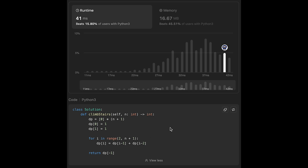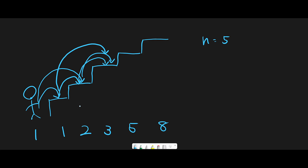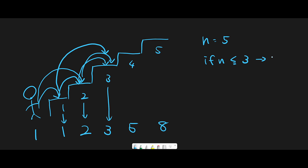Next, we can actually optimize the space complexity from O(n) to O(1). Let me show you how. Let me use the same picture. First, let me put the stair number: one, two, three, four, five. The total number of ways to reach the first stair is one, second stair is two, third stair is three. Until the third stair, we have n steps to the top. So we can say if n is less than or equal to 3, in that case we just return n.